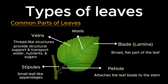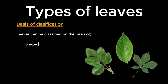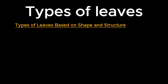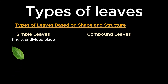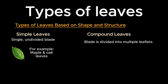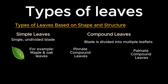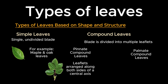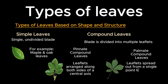Now let's discuss different types of leaves. Botanists classify leaves based on their shape, structure, venation patterns, leaf margins, and leaf arrangements. Leaves based on shape and structure can be categorized into simple and compound leaves. Simple leaves have a single, undivided blade — examples include maple and oak leaves. In compound leaves, the blade is divided into multiple leaflets. They are further classified into pinnate compound leaves, where leaflets are arranged along both sides of a central axis such as in rose and ash, and palmate compound leaves, where leaflets spread out from a single point like fingers on a hand, as in horse chestnut.